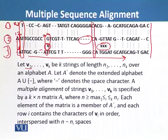If we have v1 to vk be the k strings of length n1 to nk over an alphabet A, let A' denote the extended alphabet A union with the symbol of gaps. This multiple alignment of strings v1 to vk is specified by k into n matrix, where n is greater than maximum 1 less than equal to i and less than equal to k and ni. Each element of the matrix is a member of A' and each row i contains characters of vi in order, interspersed with n minus ni spaces.